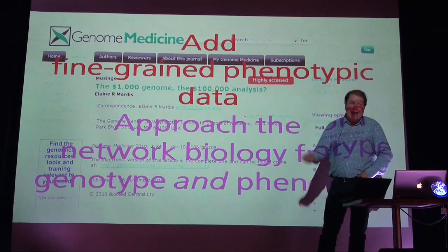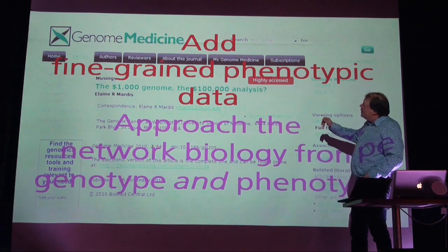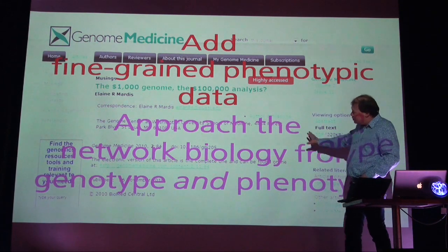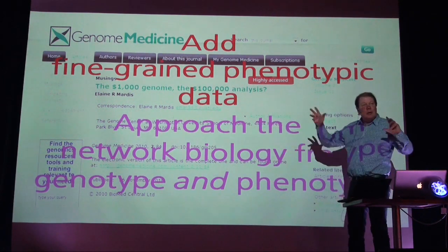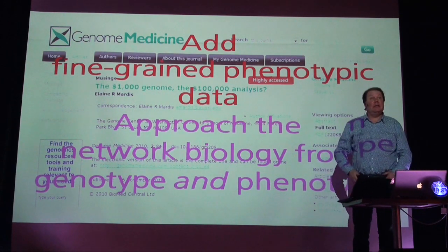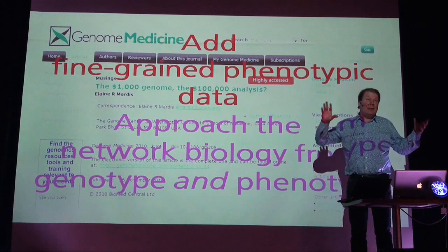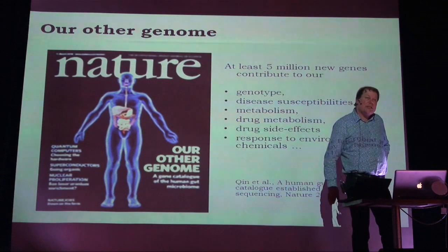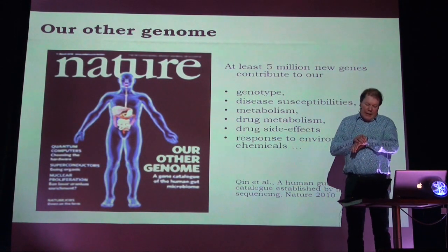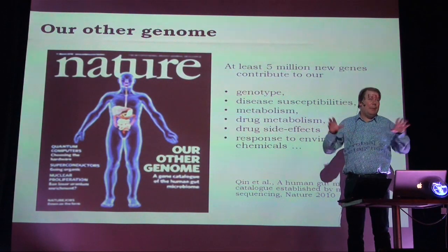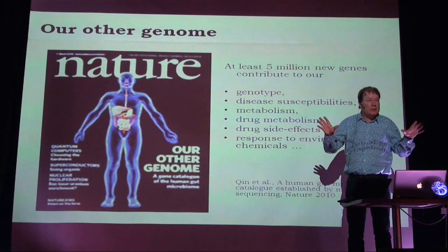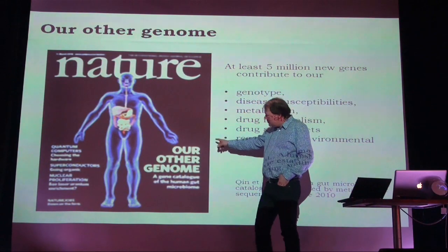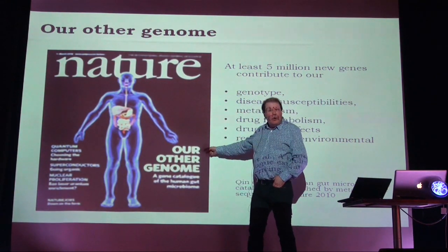My take-home message is that to hack the DNA, we should use the fine-grained phenotypic data from hospitals and what we call network biology. It's not one gene - it's networks of genes behind diseases, including complex diseases like cancers and diabetes. It might be thousands of genes involved in the phenotype. I would also warn you that the human genome is complicated - it's three billion base pairs. And it's getting even worse because there's something called our other genome.